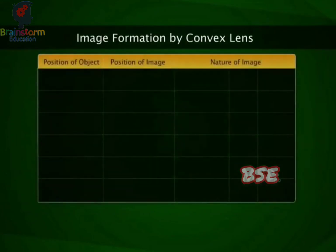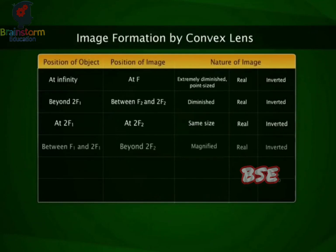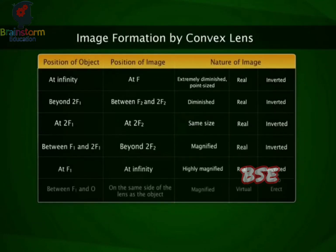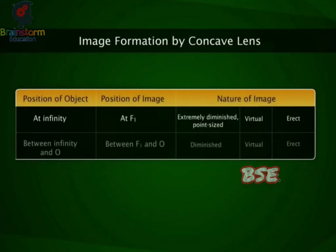Convex lenses always form real, inverted, and diminished images, except when the object is between F1 and O, in which case a virtual, erect, and magnified image is formed. Concave lenses always form virtual, erect, and diminished images, irrespective of the position of the object.